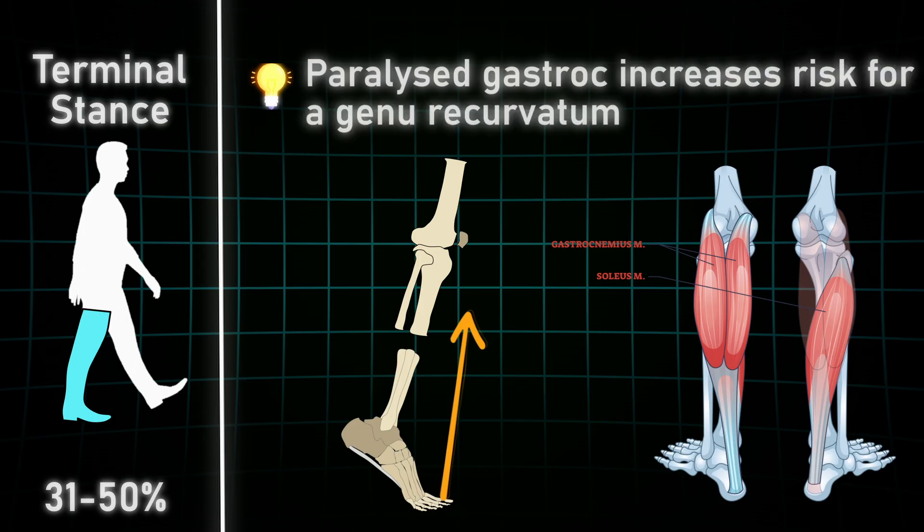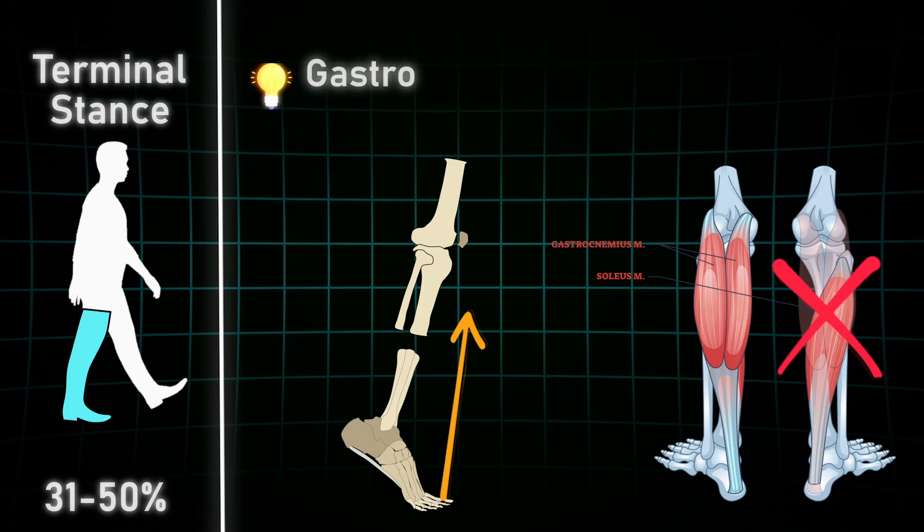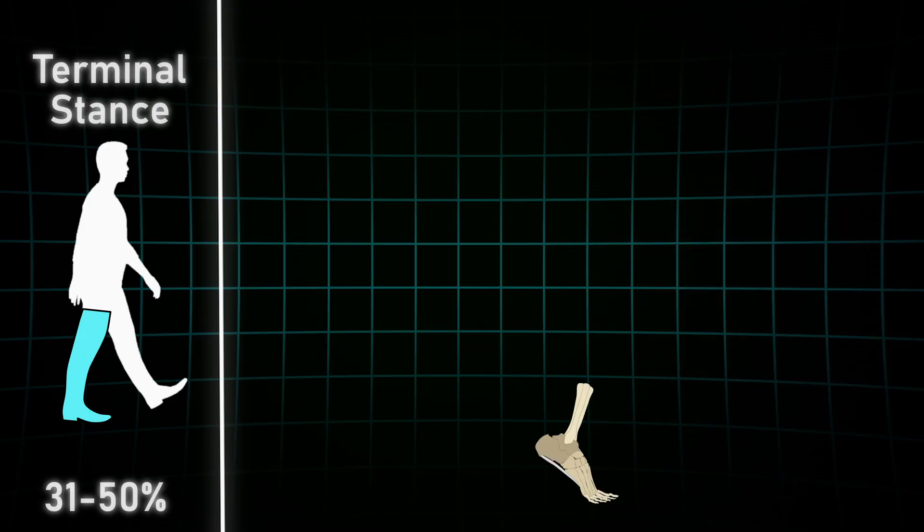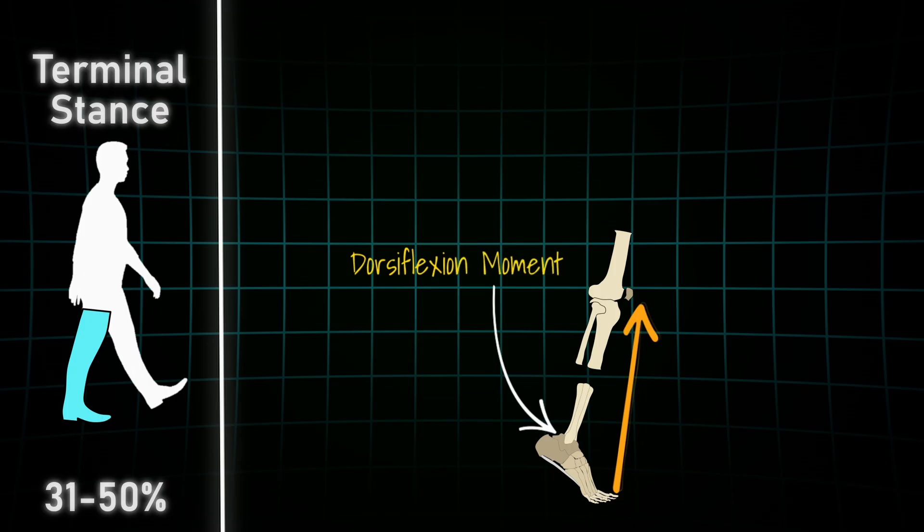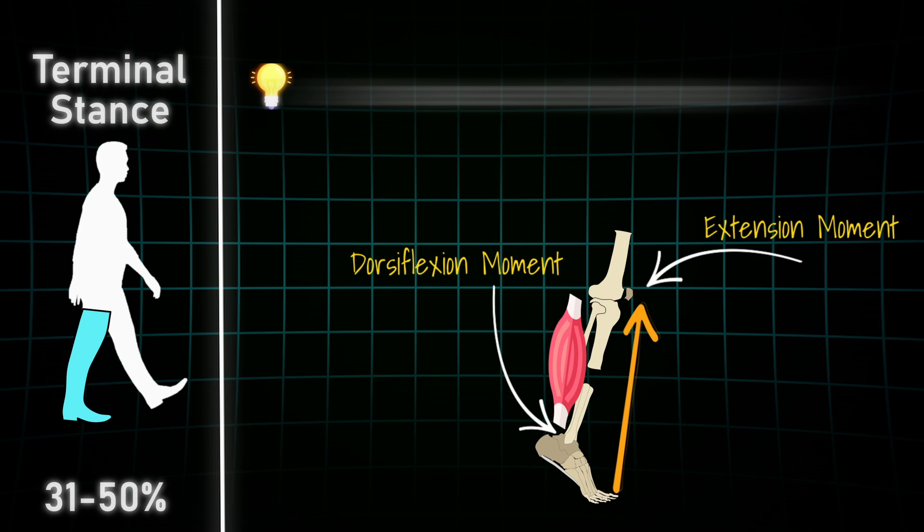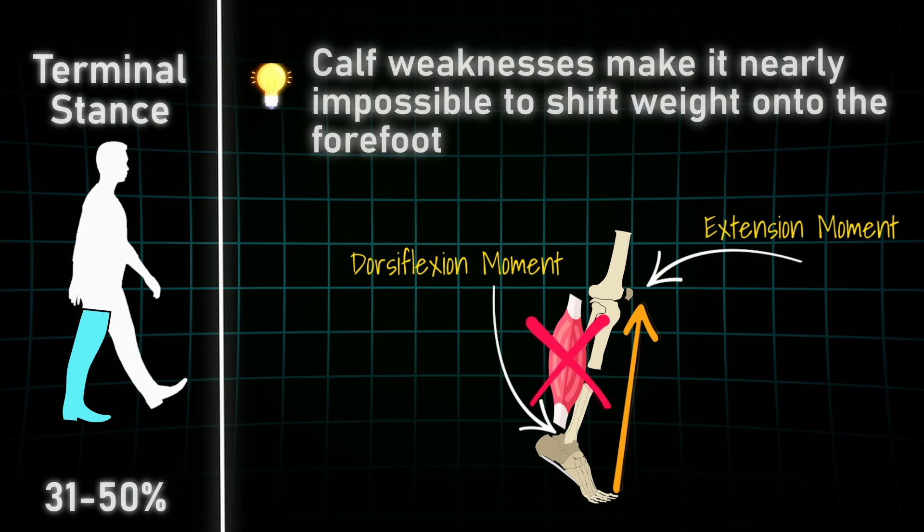Not only that, but also a paralysis of the musculus soleus makes it nearly impossible for the patient to get through this gait phase. The ground reaction force vector travels to the distal parts of the foot and pushes the foot into dorsiflexion. The calf has not only to negate this, but reverse it and propel the body forward with a well-timed plantar flexion against the ground reaction force.